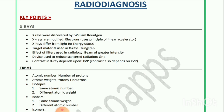X-rays were discovered by William Rankine. X-rays are modified by electrons and use the principle of a linear accelerator. X-rays differ from light in energy status. The target material used in x-rays is tungsten. The effect of filters used in radiology is a beam of greater intensity.